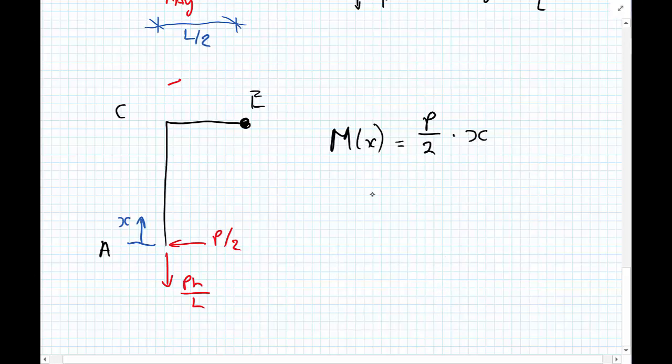And at the top of the column, so point C, the bending moment at C is equal to P upon 2, and now X would be the entire height of the column, which we've called H.